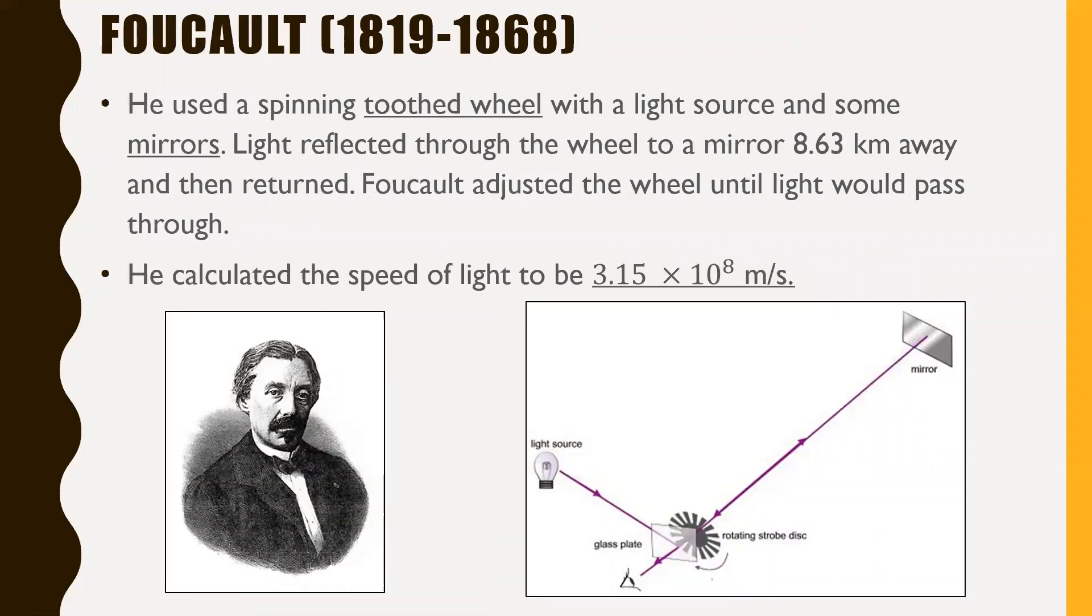Foucault is the next one. Foucault lived from 1819 to 1868. He used a spinning toothed wheel with a light source and some mirrors. Light reflected through the wheel, through the little teeth in the wheel, to a mirror that he'd positioned 8.63 kilometers away, and then it returned. Foucault adjusted the wheel until light would pass through. So the teeth on the wheel, and you can see that in this picture just down below here, the teeth on the wheel would block the light if the rotational period of this wheel wasn't set exactly perfect. Because remember, light was coming, bouncing through this toothed wheel, go all the way 8.63 kilometers away to this mirror, then bounce all the way back while this thing is rotating the whole time. And then he tried to observe to see whether or not he was able to see the light passing through. So using this, he actually got really close. He got 3.15 times 10^8 meters per second. So he did get really actually quite close to measuring the speed of light this way.